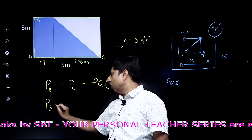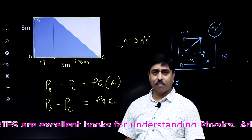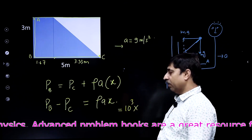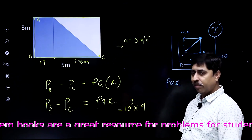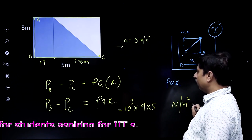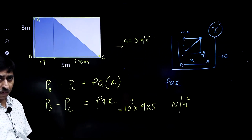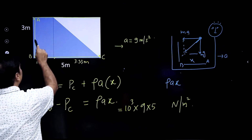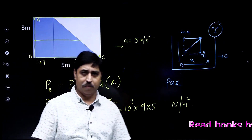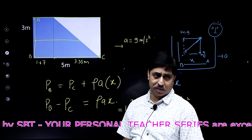So the gauge pressure is P_B − P_C = ρ·a·x. The liquid is water, so density is 10³ kg/m³. Acceleration is 9 m/s² and x is 5 meters. This gives the gauge pressure at point B in Pascals. Point B has the maximum pressure because from any other point, you would travel a smaller horizontal distance and get a smaller pressure change.